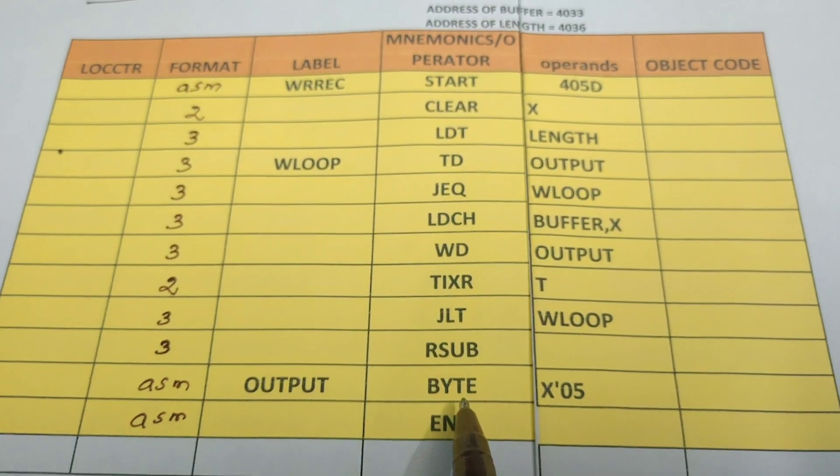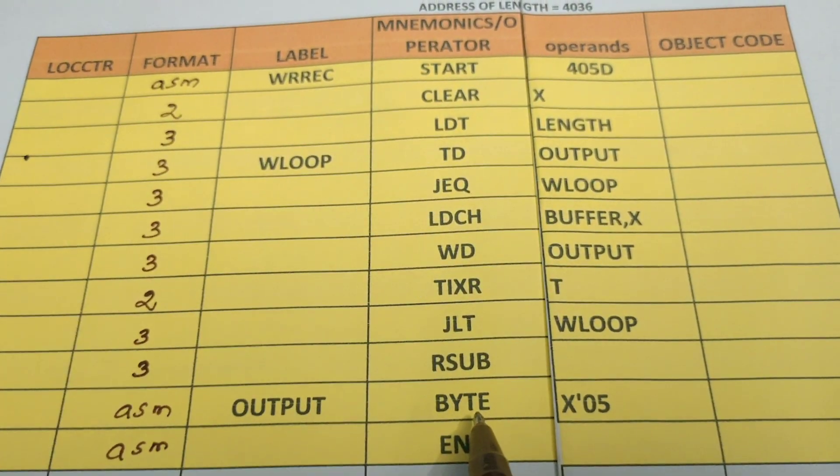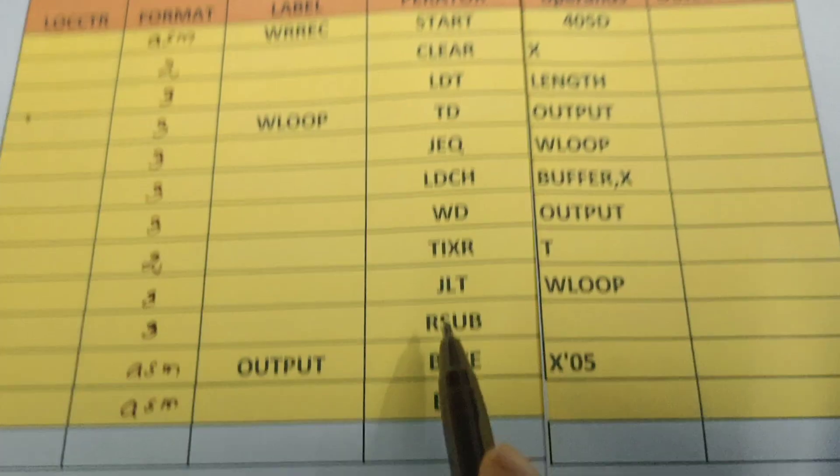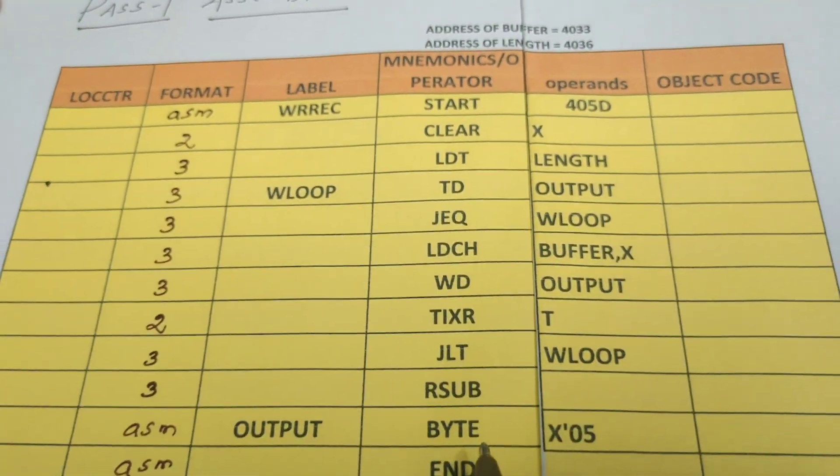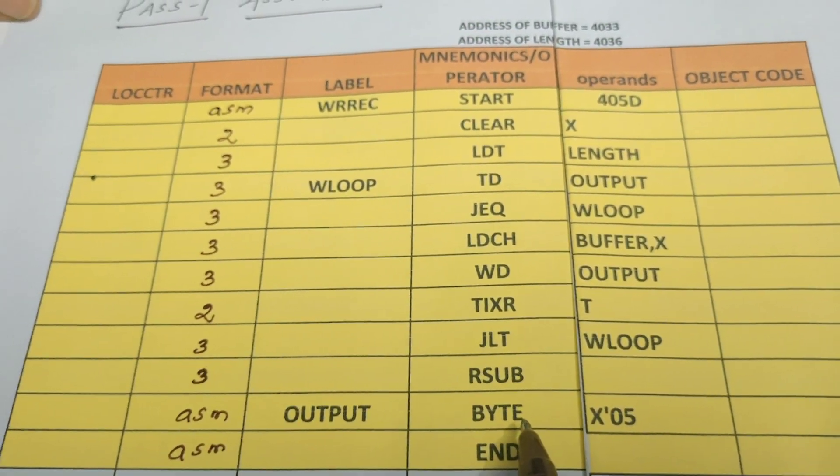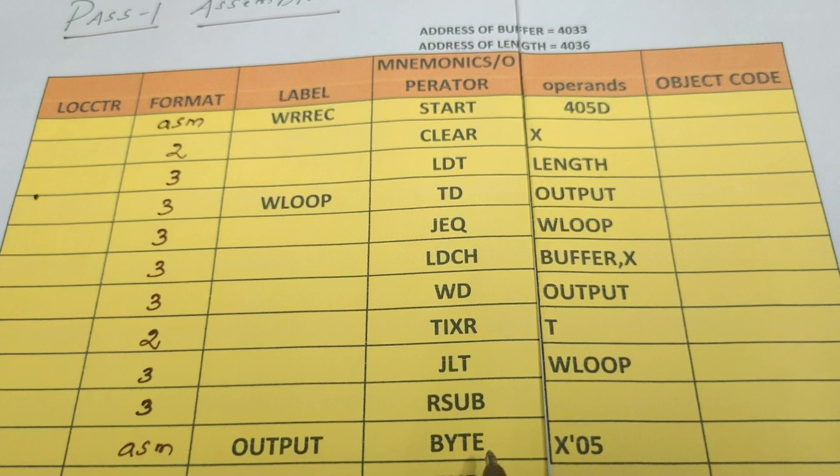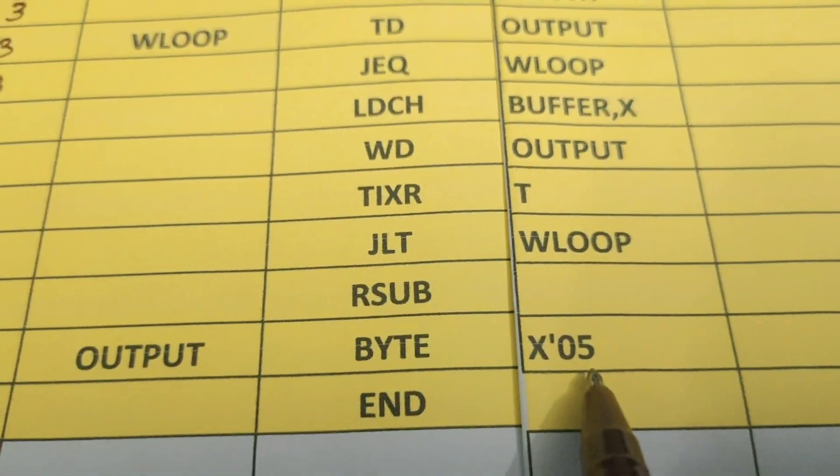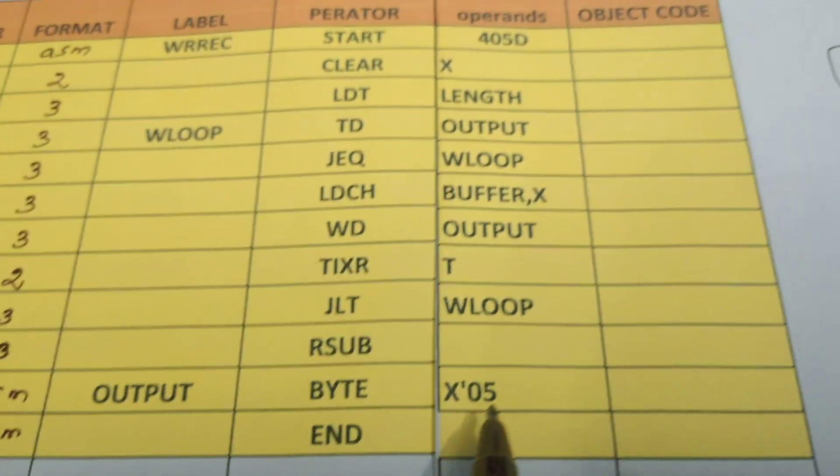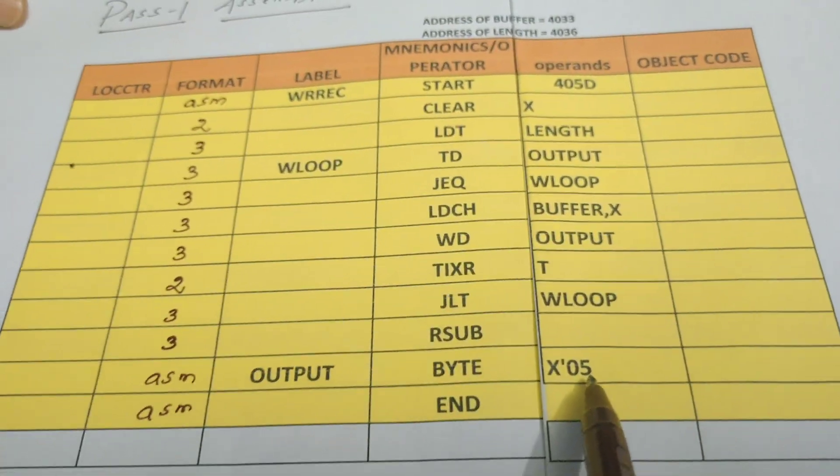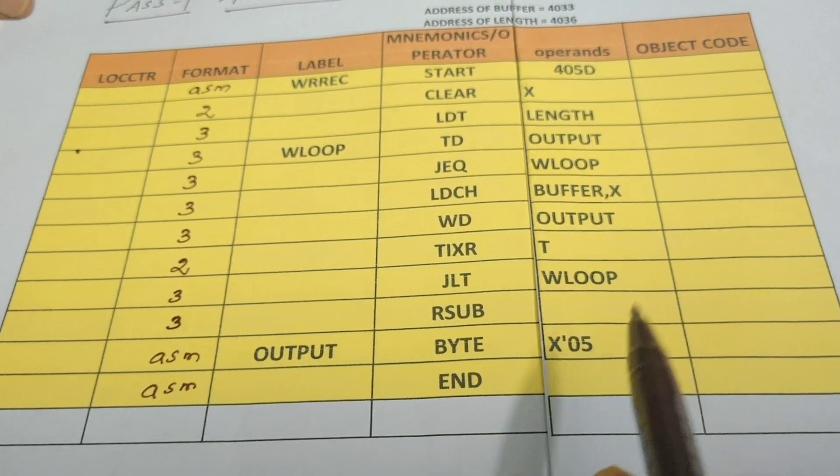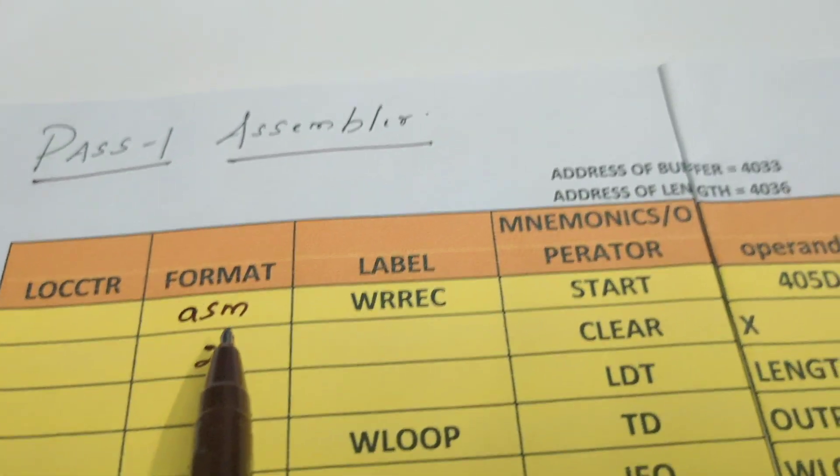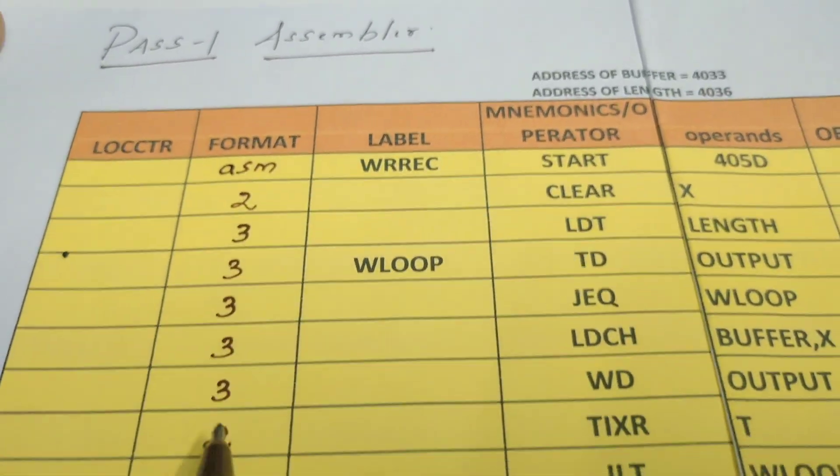Except assembler directives such as BYTE and WORD, the rest of the assembler directives never be translated into object code. But the data value whatever it specifies will be written in the hexadecimal format during Pass 2. Now for the given example we have identified what format each instruction belongs to.